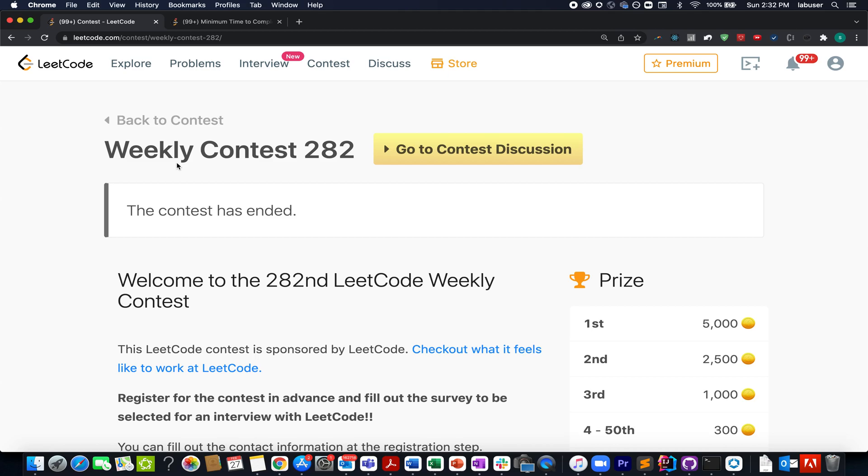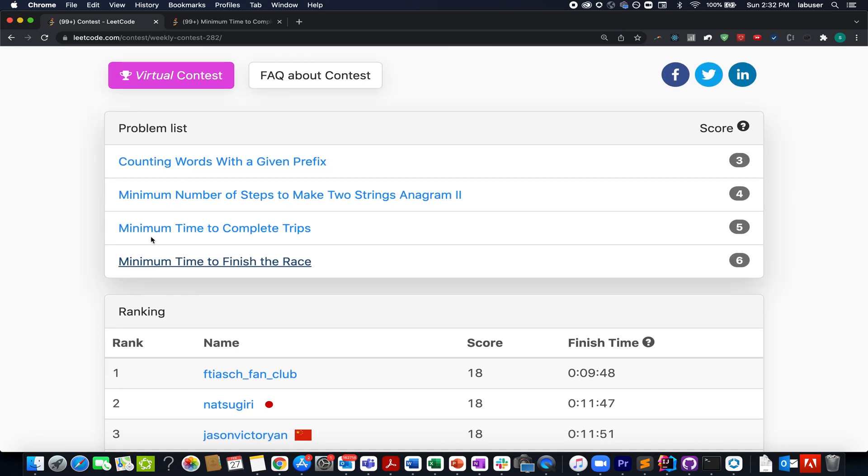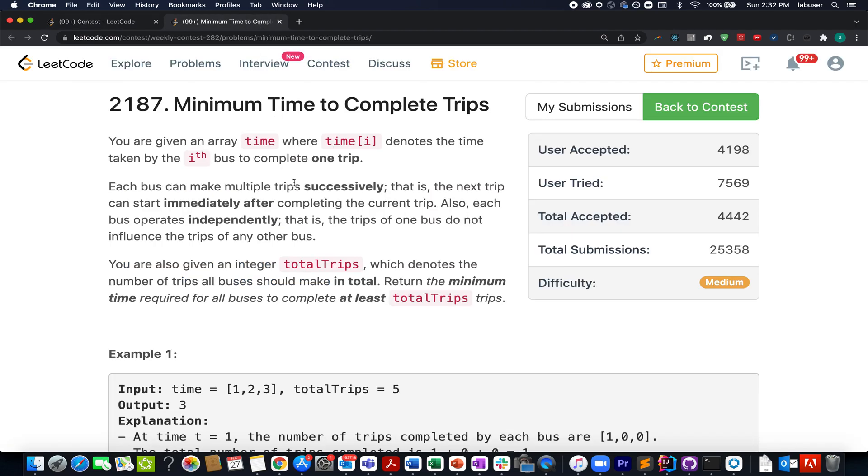Continuing the series of weekly contest 272, let's do the third question. We have already solved the first two questions, and this time it is minimum time to complete trips. In this question we are given the trip time of each bus in the form of an array and we are given the total target trip count.